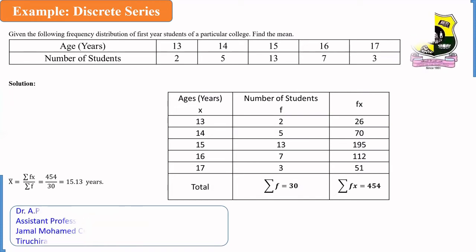16 into 7 is 112, 17 into 3 is 51. Here, each frequency is multiplied by the variable.